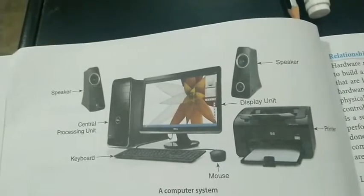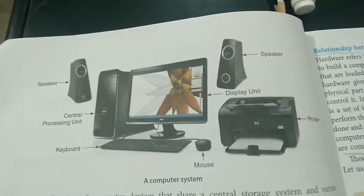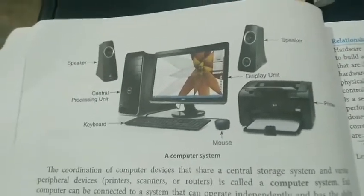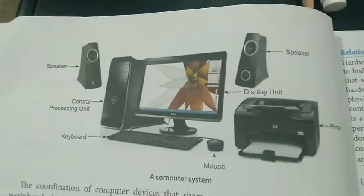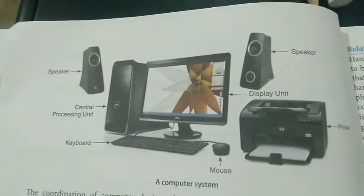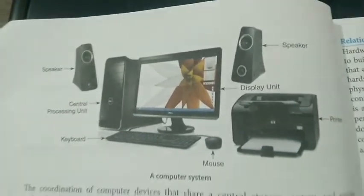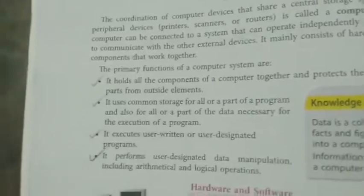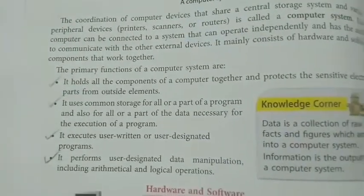Other than the four important things, the extra devices we have include a printer and a speaker. Beyond those shown in the diagram, we can also have a modem, webcam, and joystick — extra devices can be added to the computer system. Now we'll see the primary functions of a computer system.